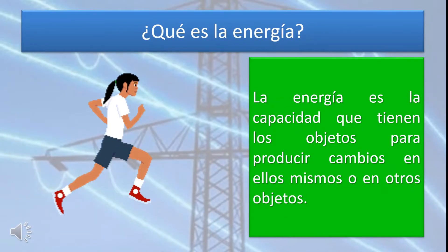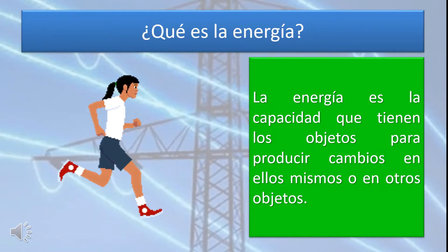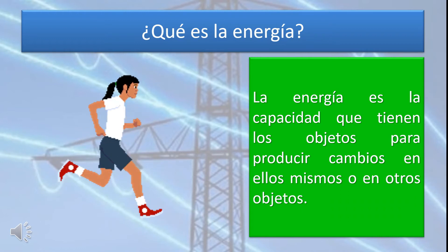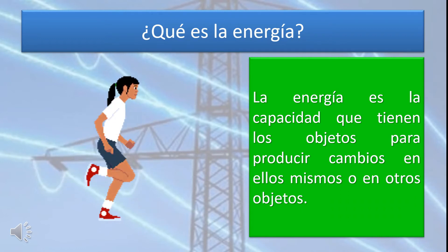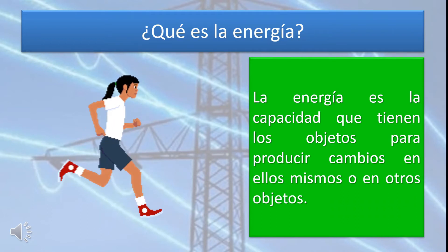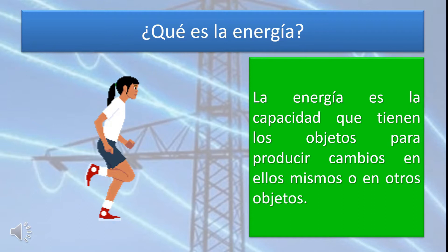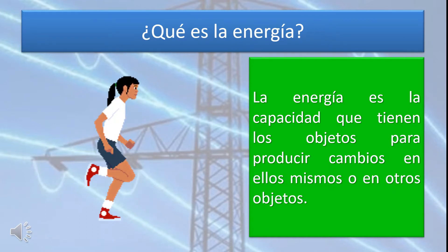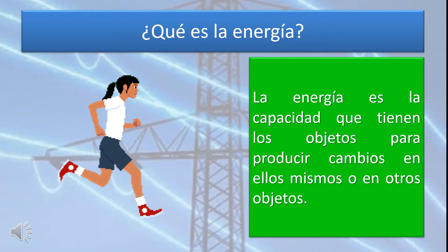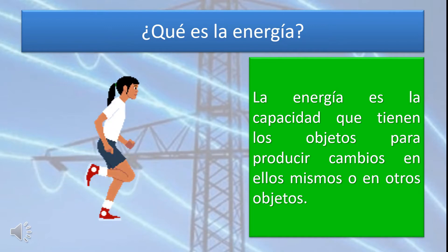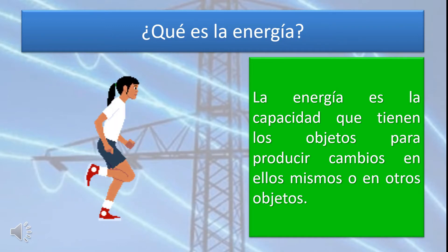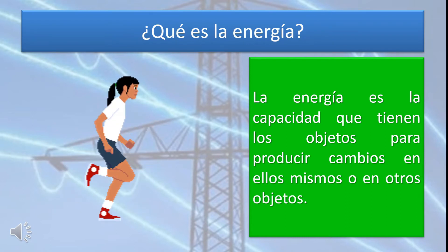Lo primero que tenemos que saber es: ¿qué es la energía? La energía es la capacidad que tienen los objetos para producir cambios en ellos mismos o en otros objetos. Por esta razón, para que un cuerpo cambie su movimiento, modifique su forma o aumente de temperatura, entre otros efectos, es necesaria la energía.